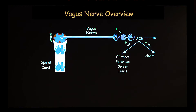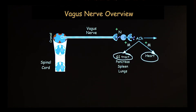The main parasympathetic nerve outside the brain is the vagus nerve — that's the 10th cranial nerve. Importantly, it supplies the heart and most of the GI tract, not all because of sacral innervation, but most of the GI tract, as well as the lungs and splanchnic organs such as the pancreas and the spleen.